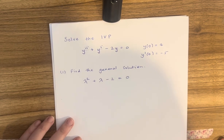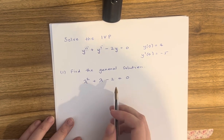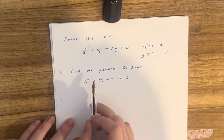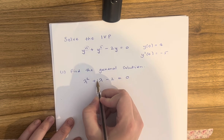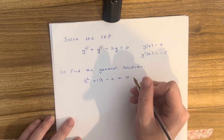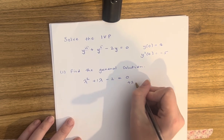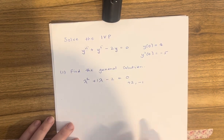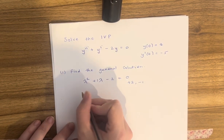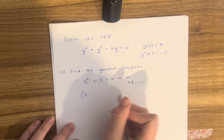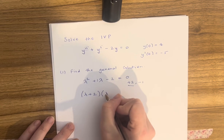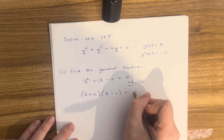Now we need to factorise this equation. We need two numbers that multiply to equal minus 2, but add to equal 1. Those two numbers are plus 2 and minus 1. So we can factorise this into (lambda plus 2)(lambda minus 1) equals 0.